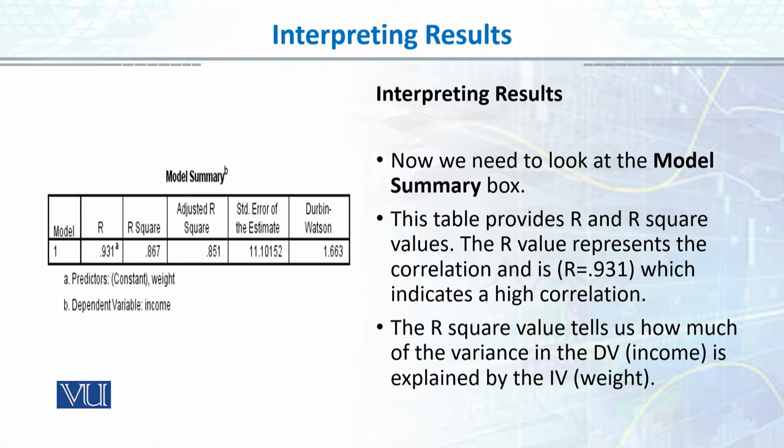We have checked the normality assumption. Now we check the linearity assumption. Linearity can be checked using simple correlation with scatter plots. Since this is a simple linear regression, we don't need to check homoscedasticity and multicollinearity.